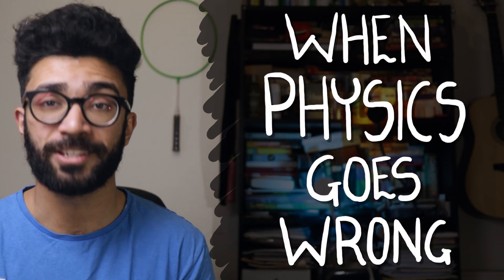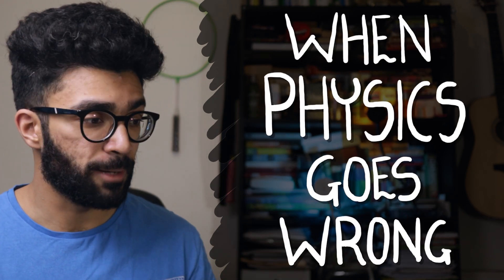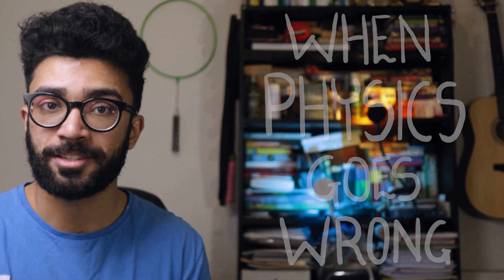I want to talk to you about what happens when physics goes wrong. Whether that's what happens when certain accepted theories start to break down in certain places, or whether that's because physicists, specifically the humans doing the physics, do things in a stupid way. Because there is a lot of that.